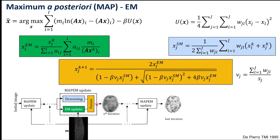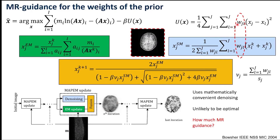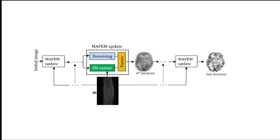This can be written as a deep network where at any given stage we have an updated reconstructed image, which gets denoised and also put into the EM update, and the two get fused together to get the next update. We can also extend that to include MR guidance to try and recover some of the poor spatial resolution due to low counts in the PET data. Of course, using a quadratic prior is unlikely to be optimal, and we don't even know how much MR guidance to use — so that's where deep learning comes in.